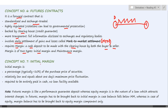Concept number seven: initial margin. This is the margin money required to be deposited at the time of initiation of the contract. It is usually under 10 percent and is a percentage of the purchase price of the securities. For example, if a security is worth $100, you only have to deposit $10 or even less.